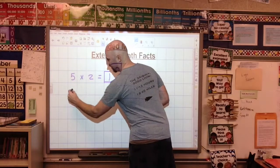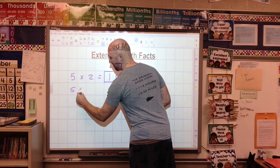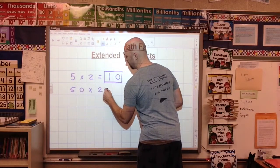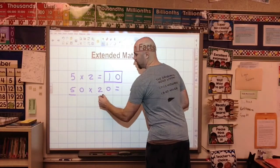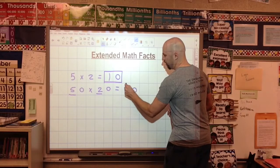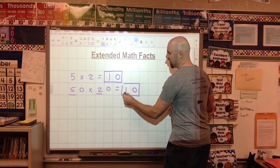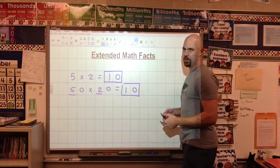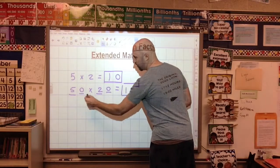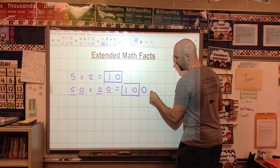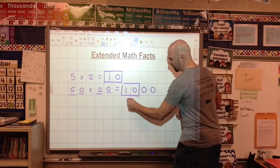5 times 2 is 10. That way, when I get down here and I'm doing 50 times 20, I still do the math fact: 5 times 2 is 10. But now I'm going to box that because that 0 is not a 0 we're adding on. That 0 is part of the actual answer. Now we're going to add on 1, 2 zeros. Our answer is 1,000.